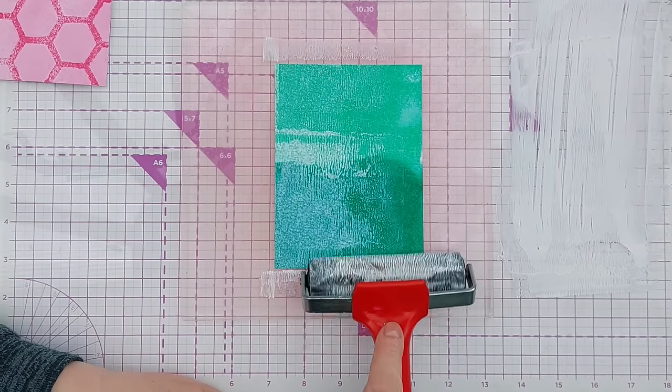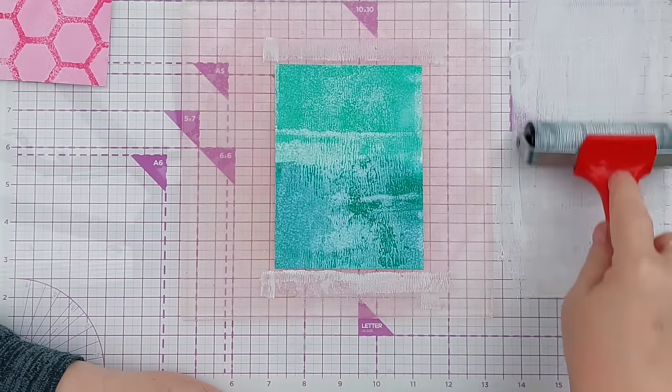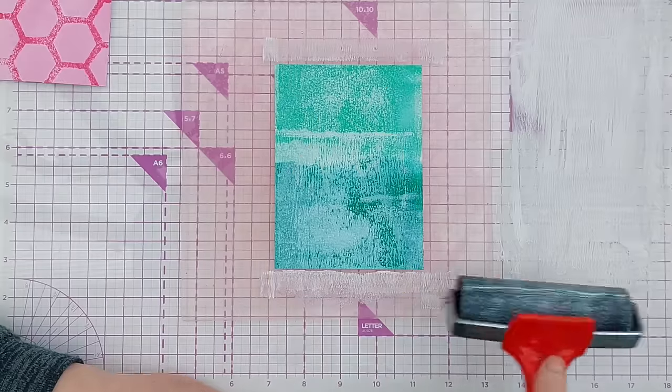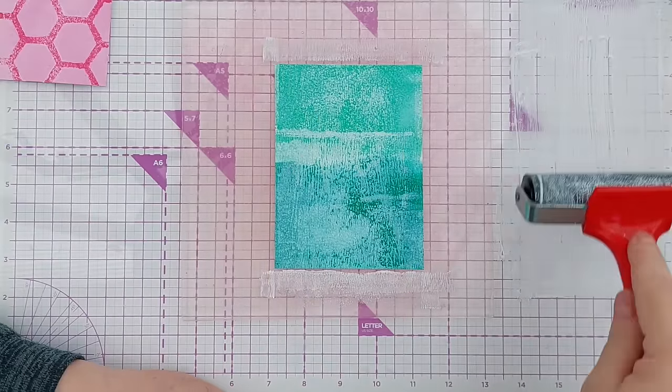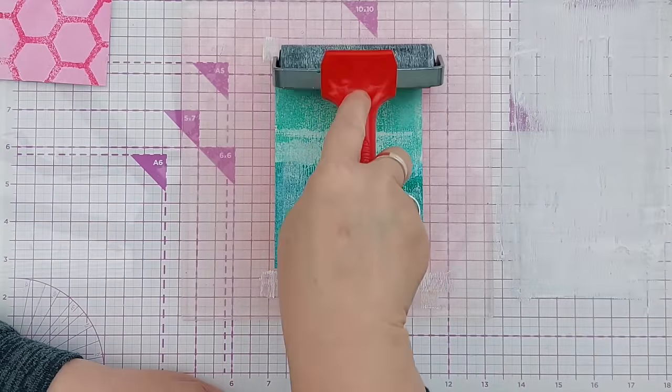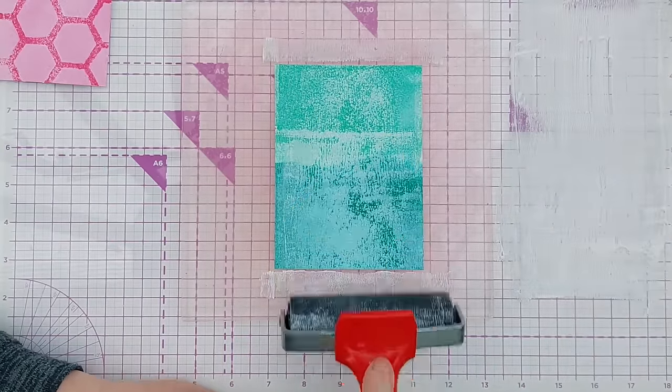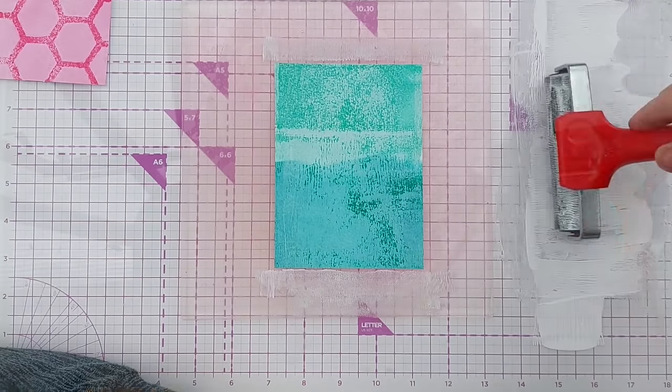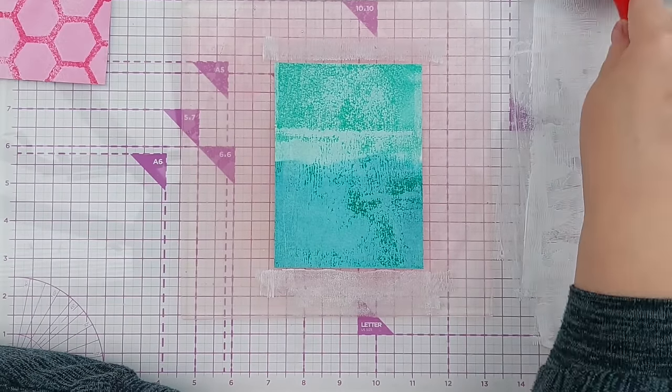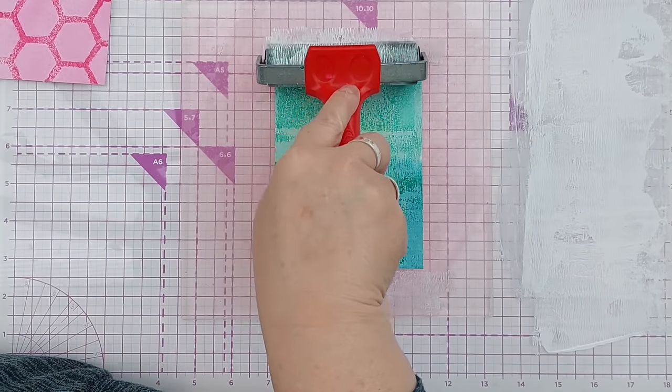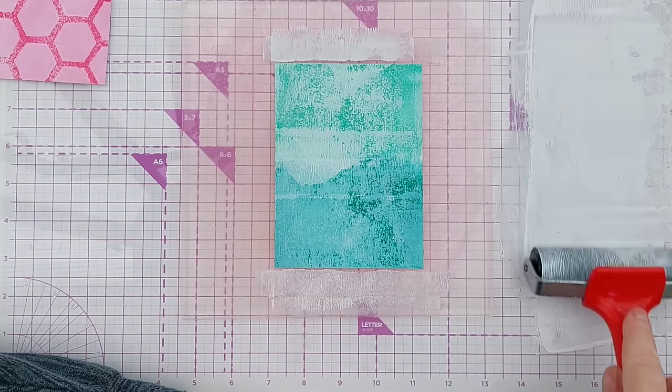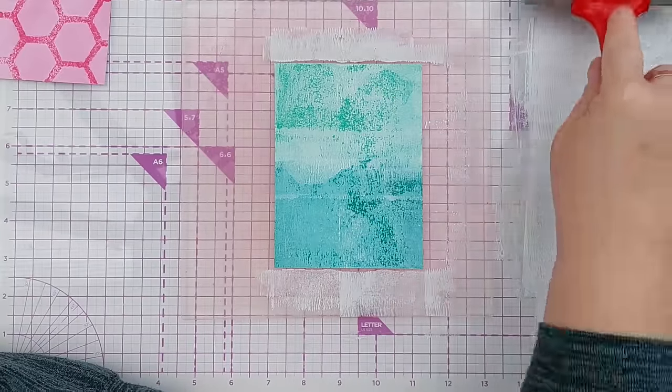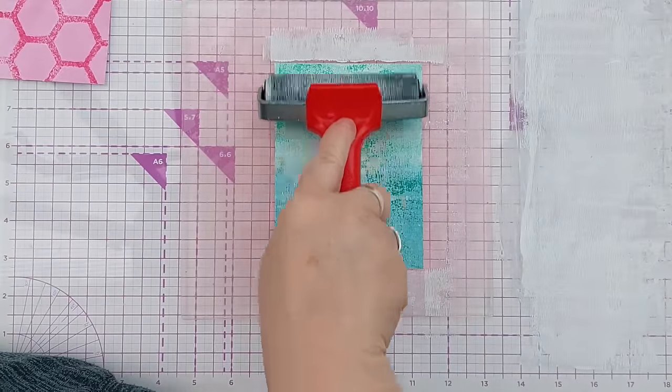I love using a brayer to add paint in this way because you get a really interesting finish. The brayer doesn't perfectly brayer on the paint so you get some areas where the paint is thicker than others and some areas where there's hardly any paint at all. It gives a variegated look but you still get that toning down of the bold background.